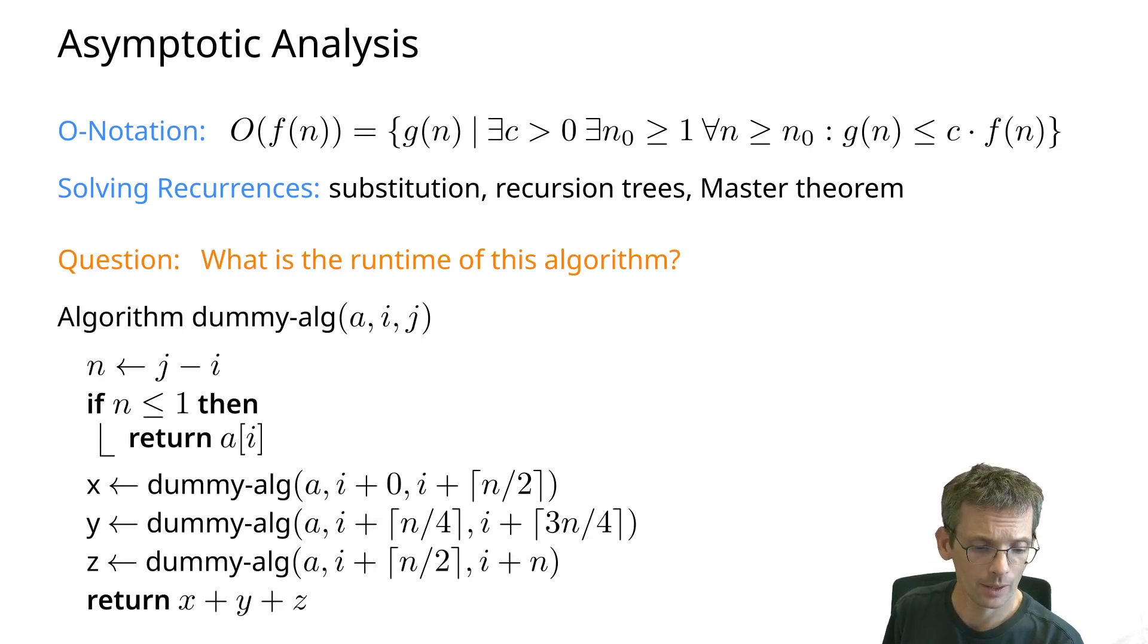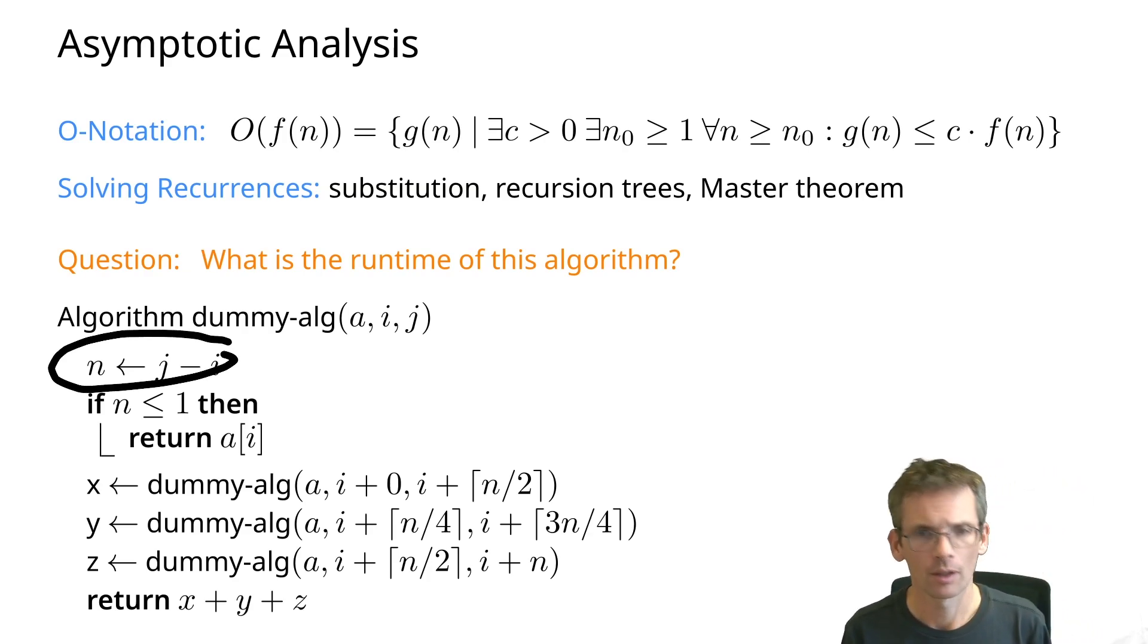So what is its running time? Just to point out, because it might not be easy to see what the input size here is - n is essentially the input size. j minus i is just defined in this way so that we can make recursive calls.